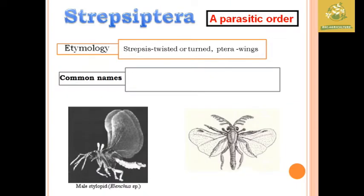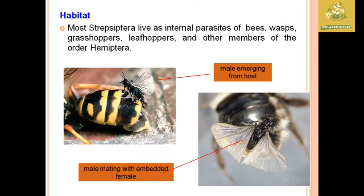Next we are going to see the Order Strepsiptera, known as the parasitic order. The name refers to twisted or turned wings. Common names include stylops and twisted-wing insects. The males mate through the embedded female, with the male emerging from the host. They are internal parasites of bees, wasps, grasshoppers, leafhoppers, and other members of Hemiptera, using these insects as host bodies.